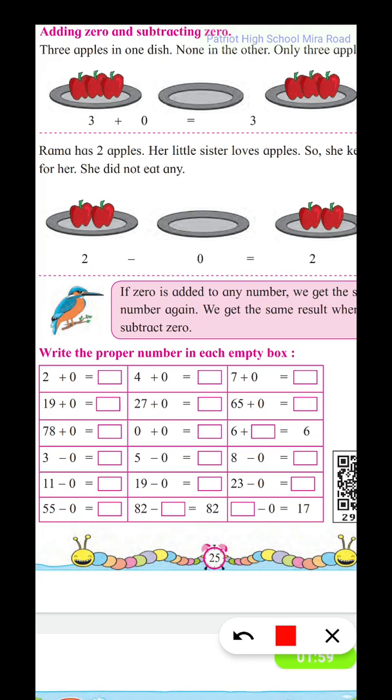Two plus zero gives two. Four plus zero gives four. Seven plus zero gives seven. 19 plus zero gives 19. 27 plus zero gives 27, we are not adding anything. 65 plus zero gives 65. 78 plus zero gives 78.